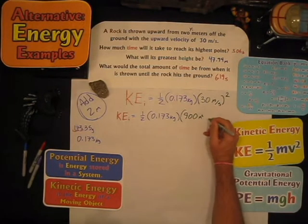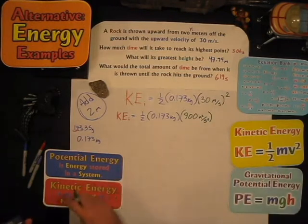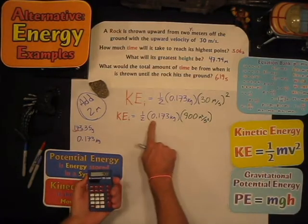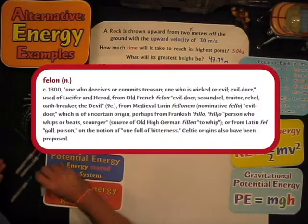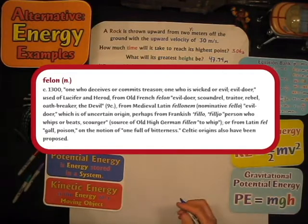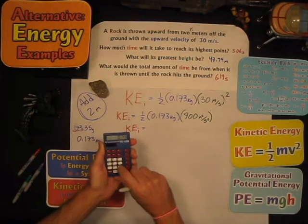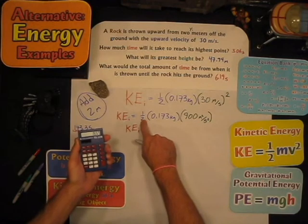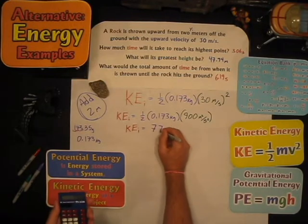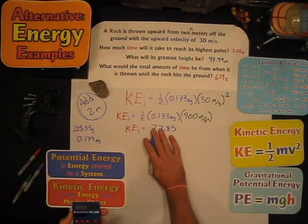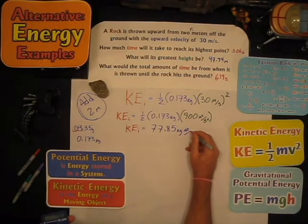Let me multiply all three together in one step. 900 times 0.173, then times one-half — or divide by two — equals 77.85. The unit is kilogram meters squared per second squared. That is a joule, but I won't replace it with J because we're going to use those units again. So my potential energy final equals 77.85 kilogram meters squared per second squared.